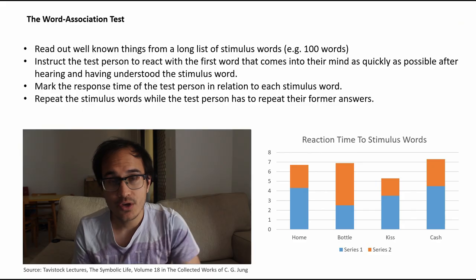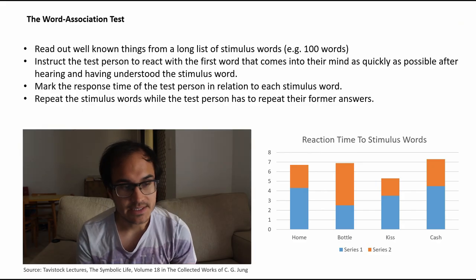Don't ask a man what he believes, ask him what does he eat. Welcome to this video — today we're going to be talking about Carl Jung's word association test, psychological complexes, and sub-personalities.